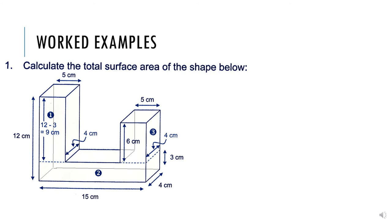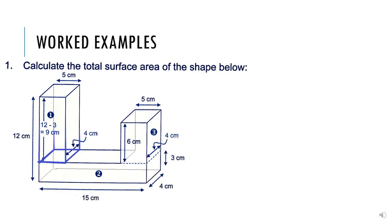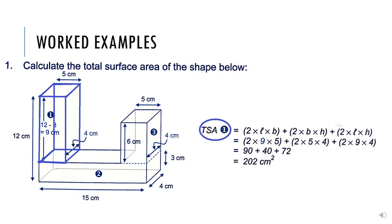Let's take a look at what they've done. I'll demarcate the first prism. To get the total surface area of this prism, we take 2 times length times breadth, plus 2 times breadth times height, plus 2 times length times height. They've given this as 2 times 9 times 5, plus 2 times 5 times 4, plus 2 times 9 times 4, which gives us the total surface area of this prism if we included all of the sides.